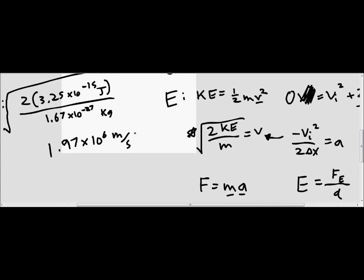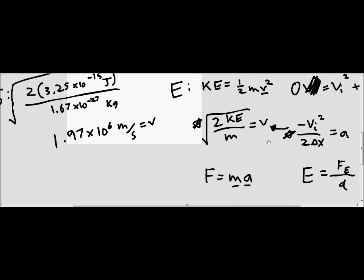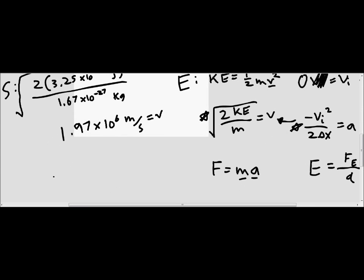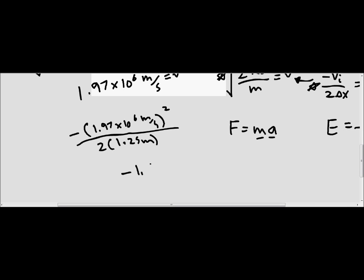Now that we've found the velocity we can plug this into the equation to find the acceleration. We have negative 1.97 times 10 to the sixth meters per second, squared, over 2 times 1.25 meters. When we calculate those together the value we get is negative 1.56 times 10 to the 12th meters per second squared. That is equal to the acceleration.